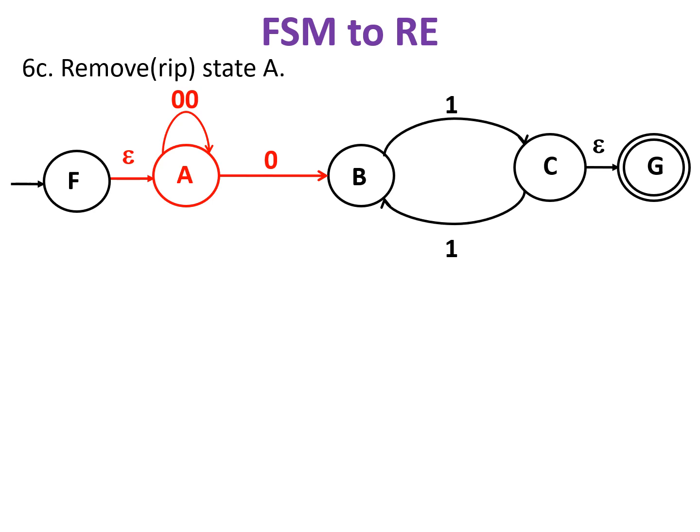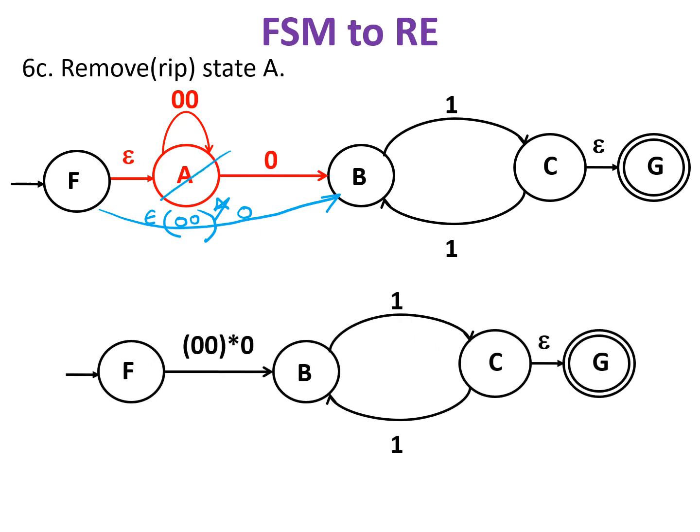Let's remove state A. State A is in between F and B with a transition epsilon from F having a self loop for string 00 followed by a compulsory zero reaching state B. On eliminating state A, we get F to B, a transition with a regular expression (00)*0.